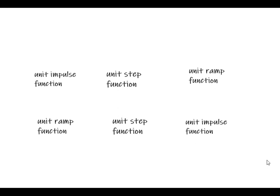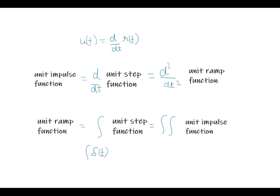The unit impulse function equals the differentiation of the unit step function and the double differentiation of the unit ramp function. Similarly, the unit ramp function equals the integration of the unit step function or double integration of the unit impulse function. The unit step function is the derivative of the unit ramp function and the integration of the impulse function.